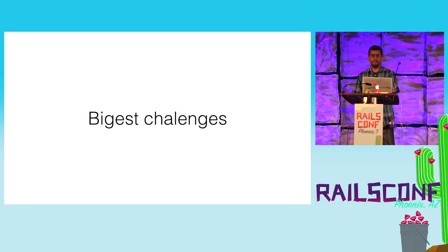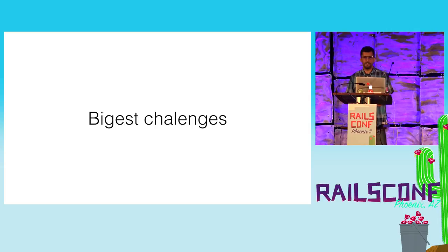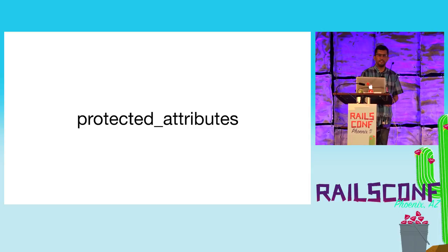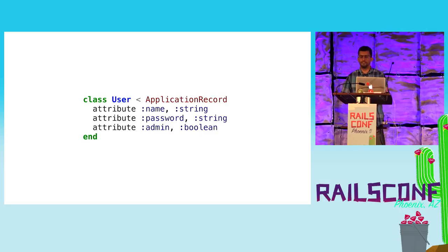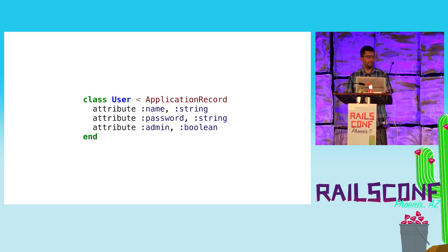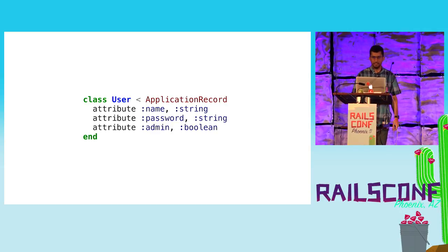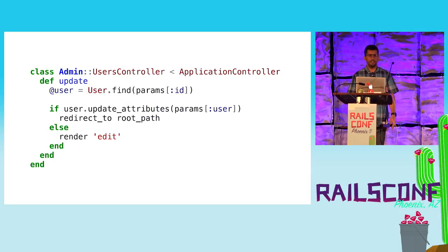Let's talk about our biggest challenges. The first was the protected attributes gem. If you don't know what protected attributes was — let's say you have a User model with attributes name, password, and admin. By the way, this attribute API is actually working so you can define your attributes like this in a Rails application.